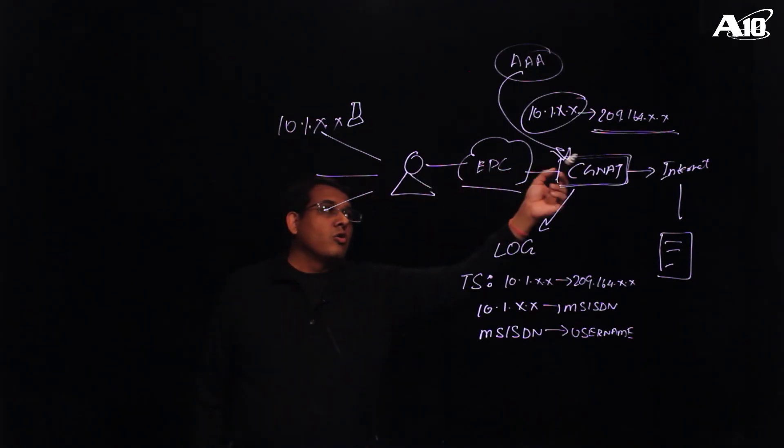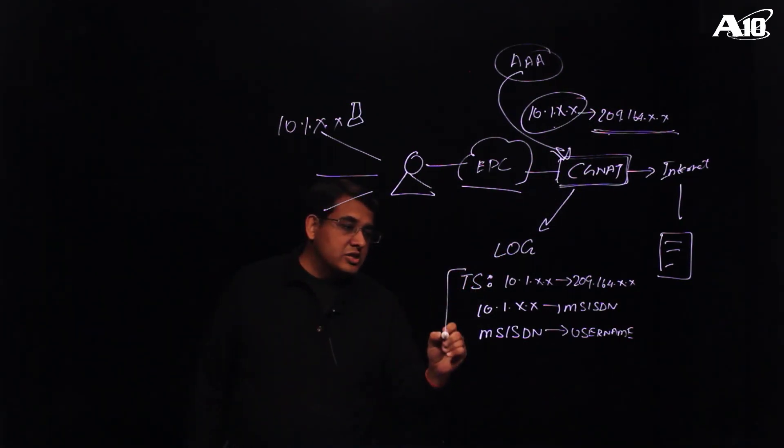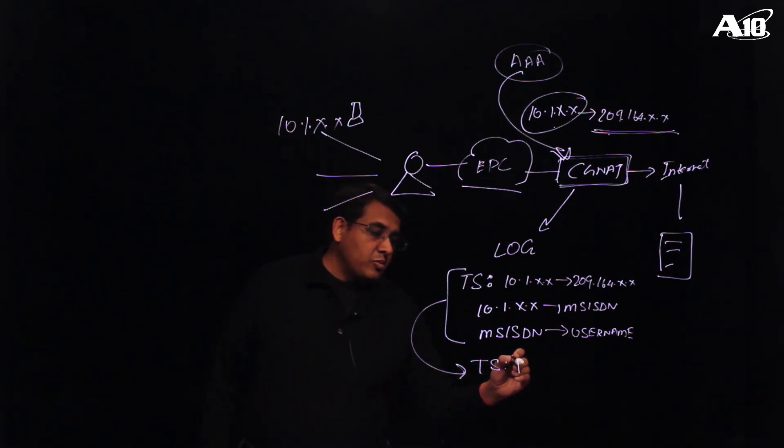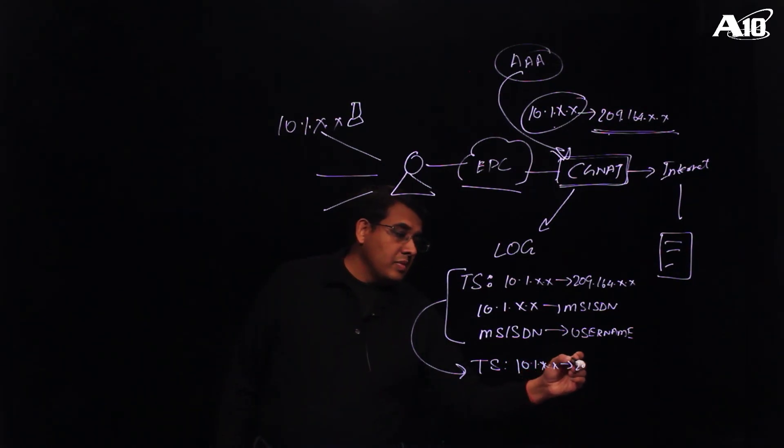Now when the user roams the internet and we create this mapping from private to public IP, we can create a unified log message which contains all this information. So we will have one unified log containing the timestamp, the private IP to public IP, then we will also map the MSISDN value, and it will also contain the username.